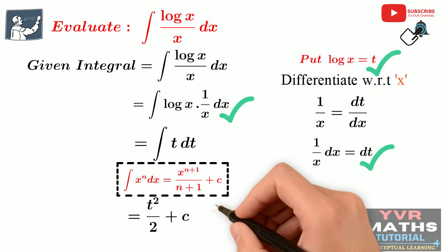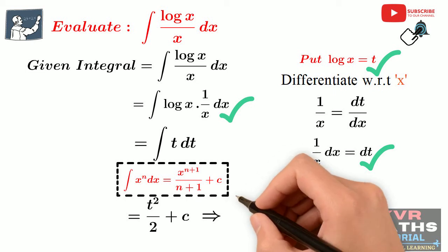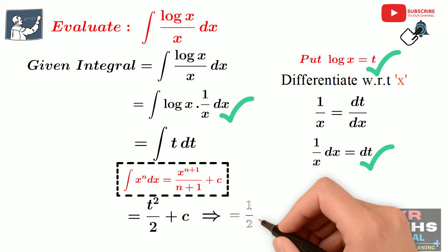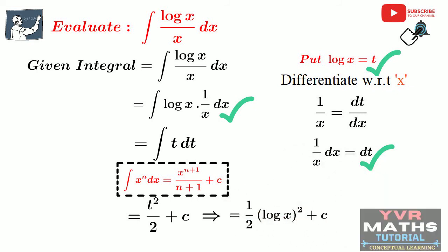Now replace the new variable by the original variable in the answer. The new variable is t and the original variable function is log x. So substituting t = log x, the final answer is 1 by 2 into (log x)² plus c. This is the final answer for the given integral. I hope you understand.